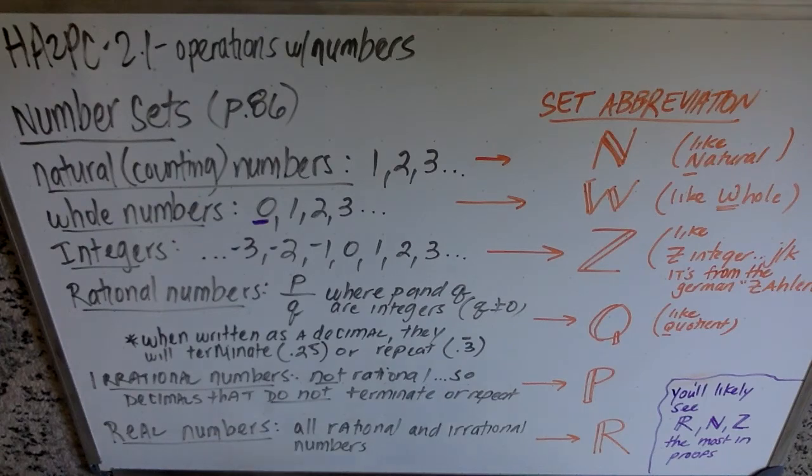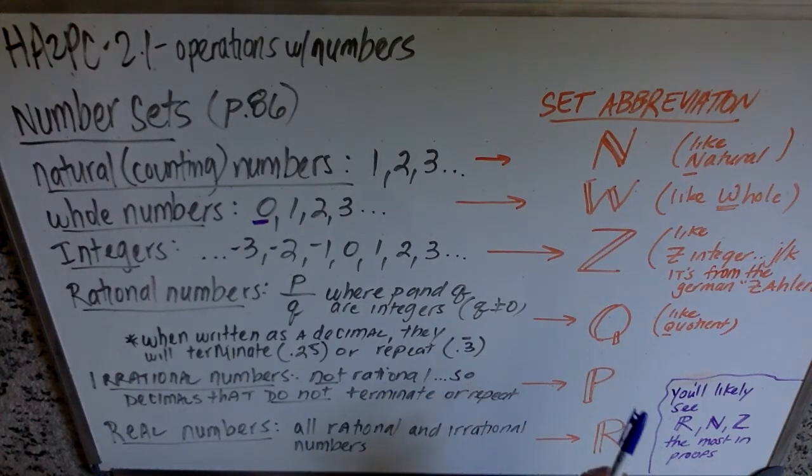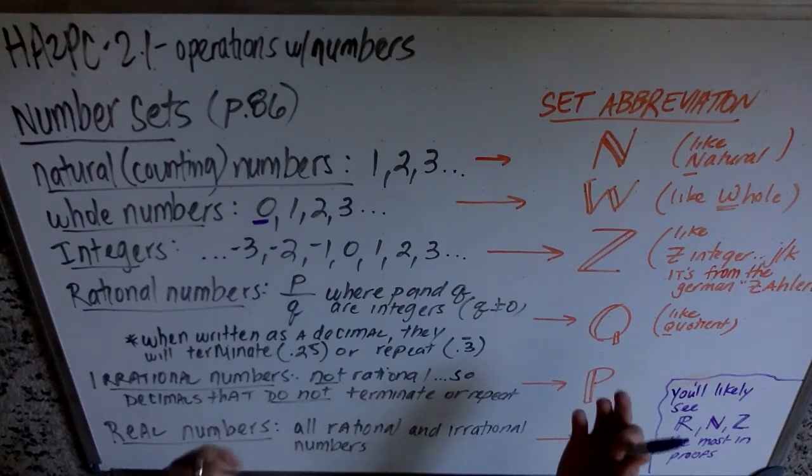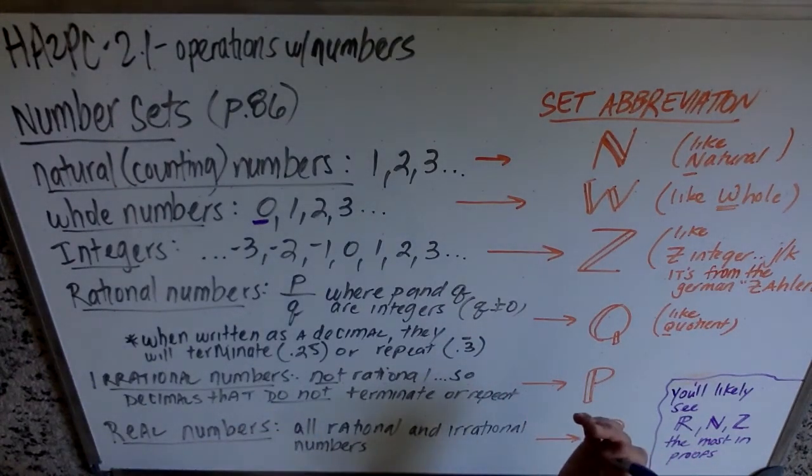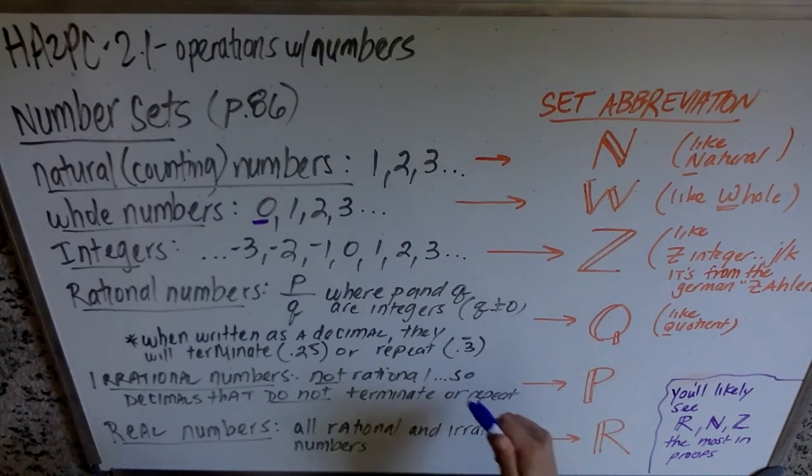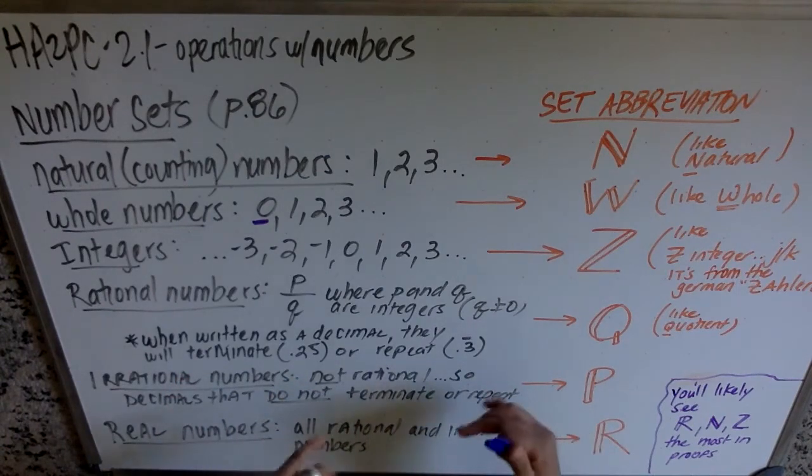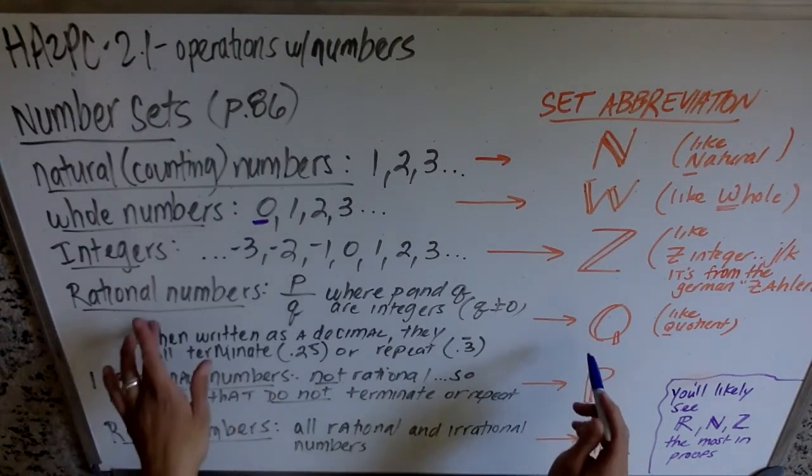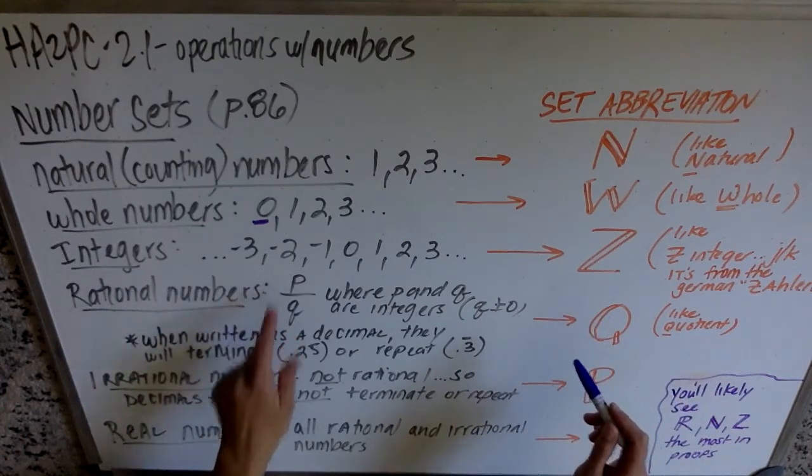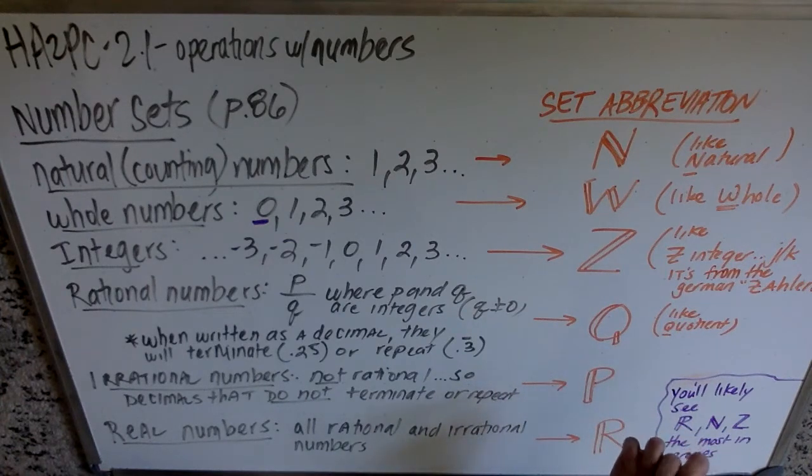The rational numbers use the abbreviation Q, like quotient. It doesn't use R, which you're probably thinking, but rational starts with an R because there is a bigger, more important set at the bottom of this page that totally has dibs on R. There is a set that encompasses all of these sets, and that set uses R. So the rational numbers are Q, like quotient. If you think about a rational number, it's a kind of division.